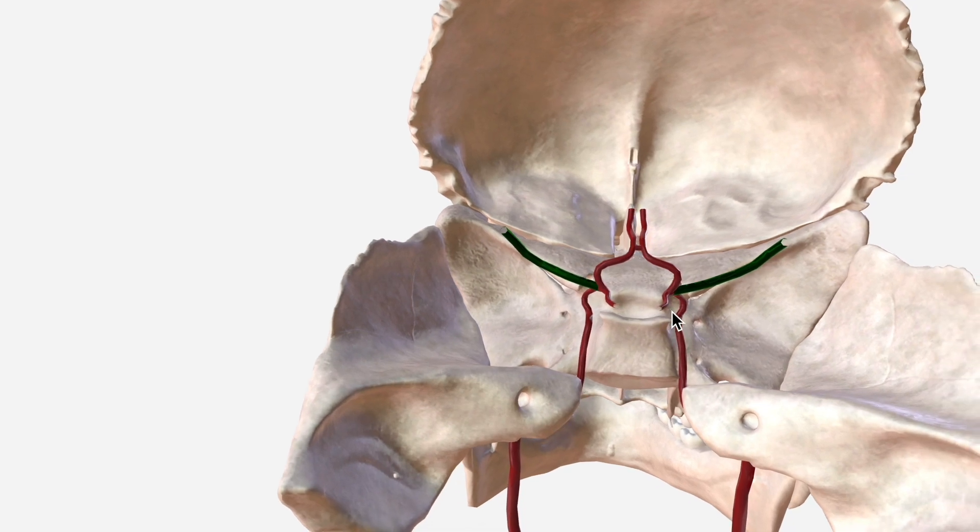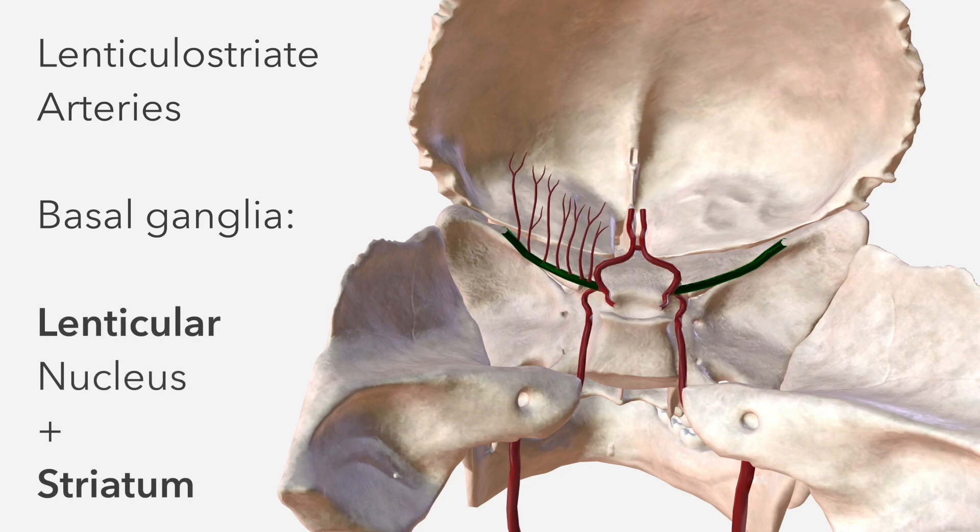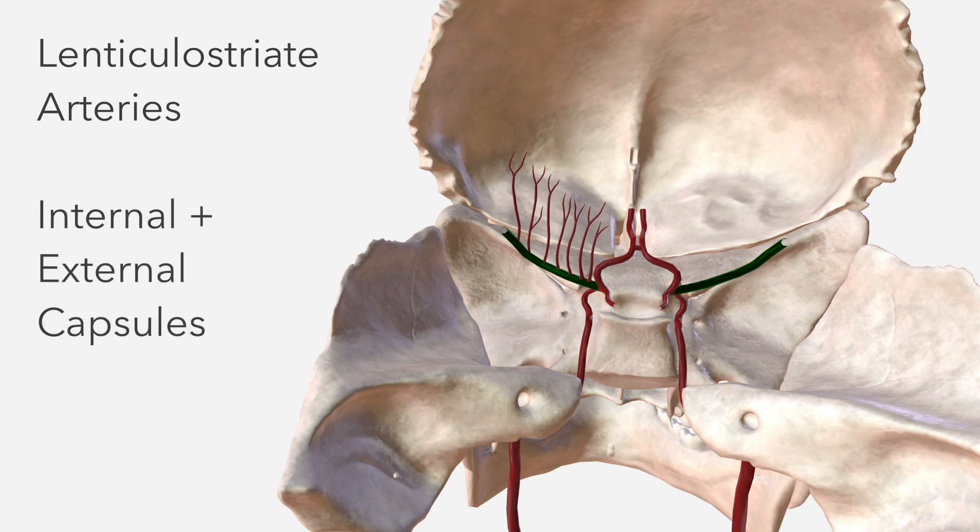The M1 segment of the MCA extends from the ICA, the internal carotid artery, until the bifurcation into its terminal branches. There are two sets of arteries which depart from the M1 segment, the first of which is the lenticulostriate arteries. These supply the basal ganglia, in particular the lenticular nucleus and the striatum, giving the arteries its name. It also supplies large portions of the external and internal capsules.